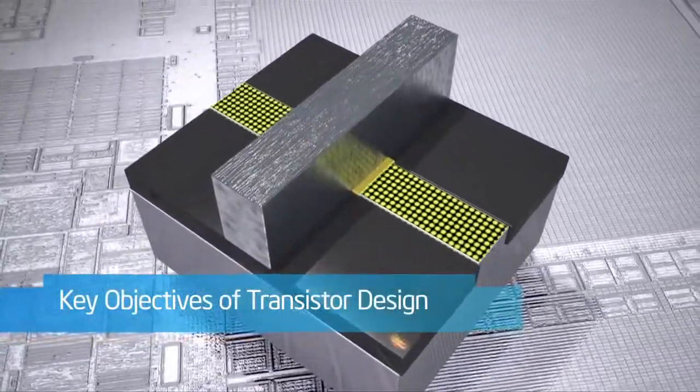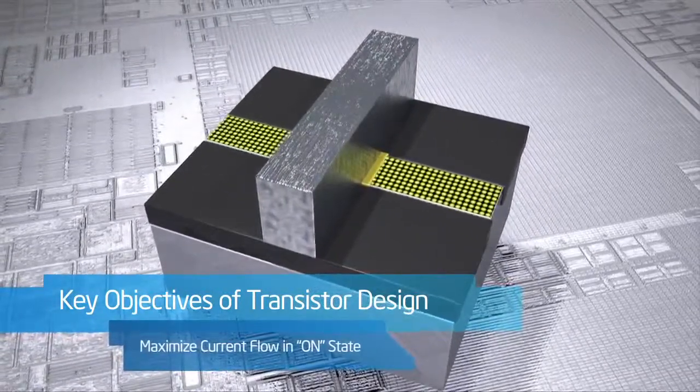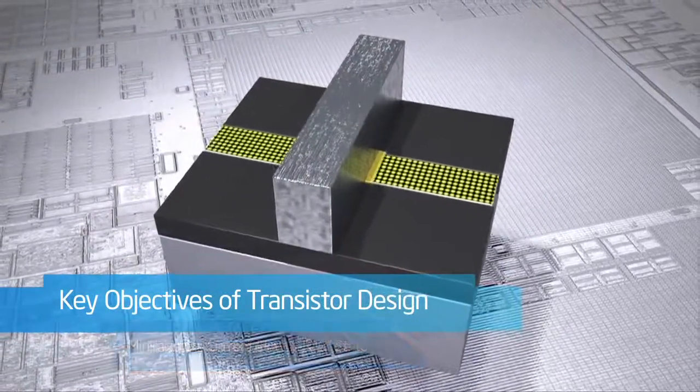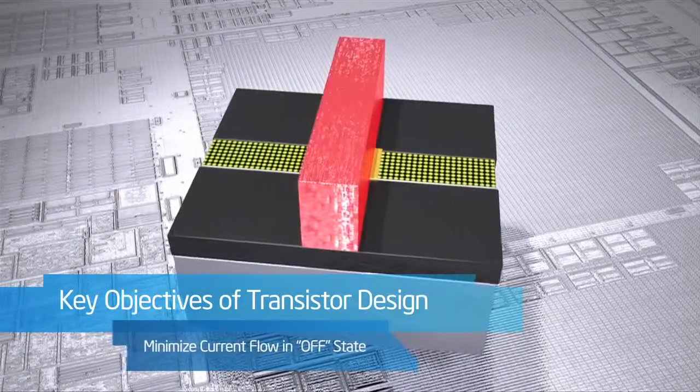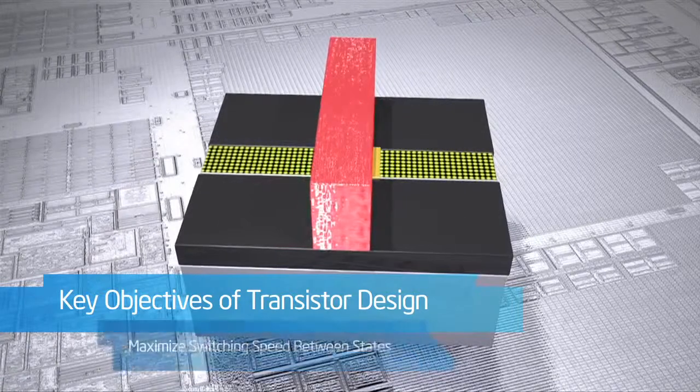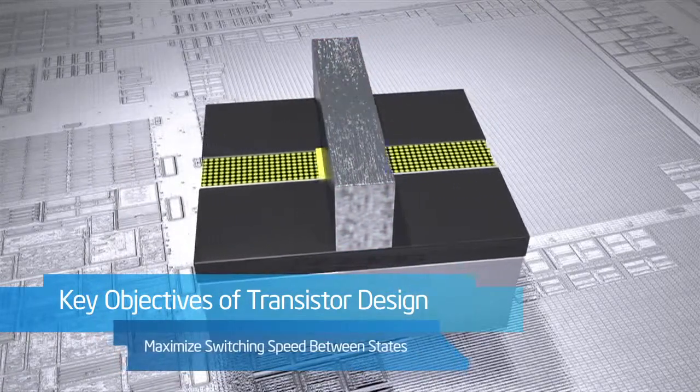Some key objectives in transistor design are to have as much current flowing as possible when in the on state for performance, to have as close to zero current flowing when it is in the off state to minimize power usage, and to switch very quickly between the two states, again, for performance.